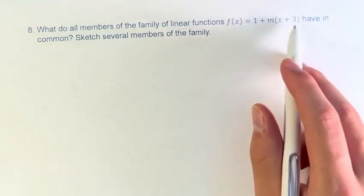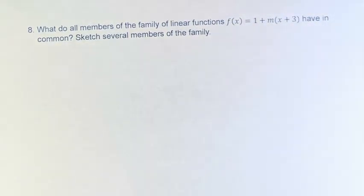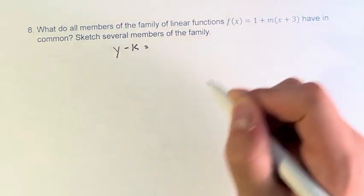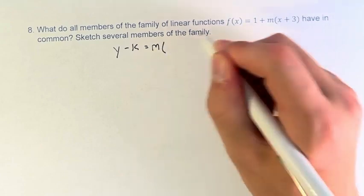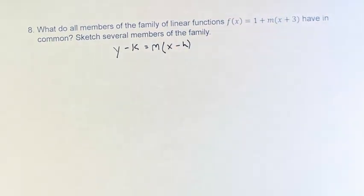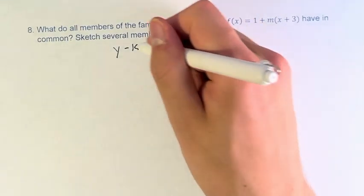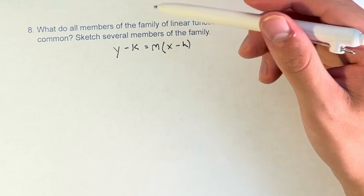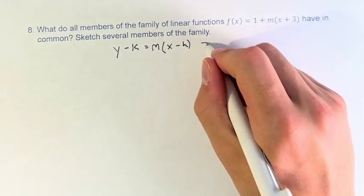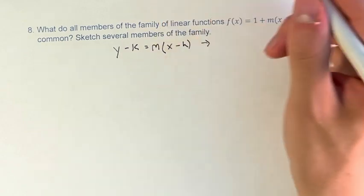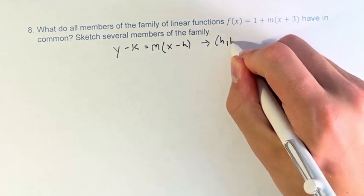So what we can notice here is this is very close to point-slope form. Point-slope form, if you're unfamiliar, is y - k = m(x - h). This is a family of functions for which the slope m can change, and it goes through the point (h, k).